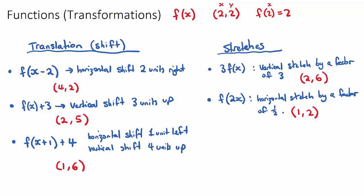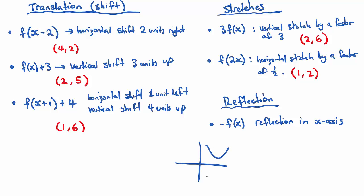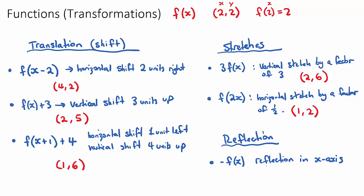The third component of transformations is reflections. There are two types. If we have negative f(x), all of our y values are now going to be negative — they're flipped vertically — so this is a reflection in the x-axis. If I have a function and put a negative in front of it, all the x values stay the same but the y values are reflected in the x-axis. So our point (2, 2) becomes (2, -2).